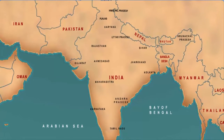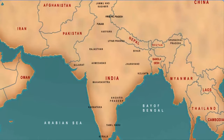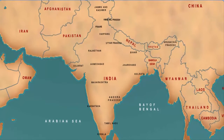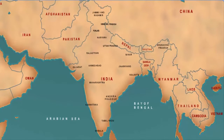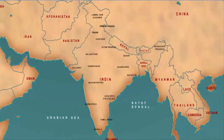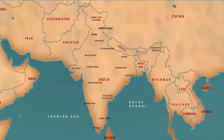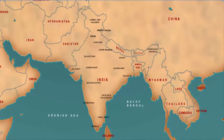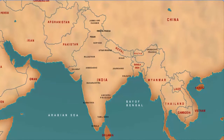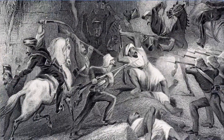The year 1857 holds a significant place in Indian history. It witnessed the first revolt against the mighty British Empire in India. What started as the sepoy mutiny soon spread out like wildfire mainly across northern and central India. However, this sporadic revolt failed due to the lack of coordination and planning of the revolutionaries.